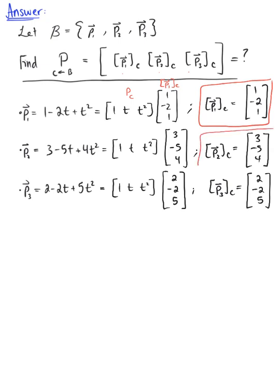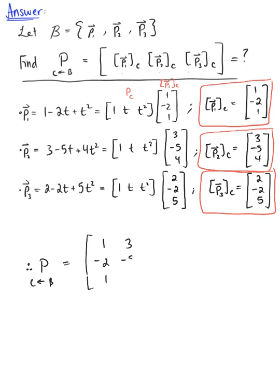We take these three coordinate vectors and plug them into our change of coordinates matrix from basis B to basis C. Therefore, the change of coordinates matrix from B to C is the 3×3 matrix with column vectors [1, −2, 1], [3, −5, 4], and [2, −2, 5]. This is the first part of our final answer.